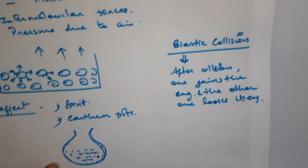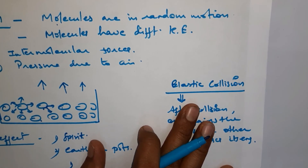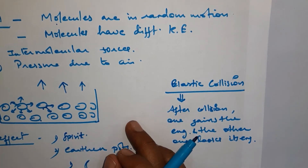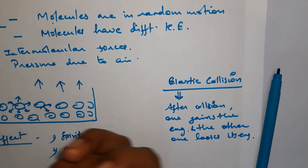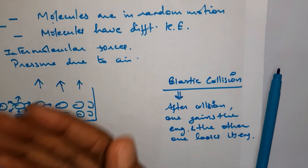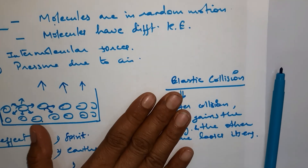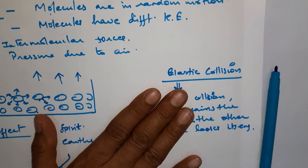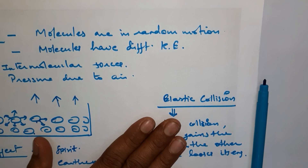Another example is sweat on our bodies. During summer, sweat brings a cooling effect on our skin. The sweat takes heat energy from our skin, and as it takes this heat it changes to vapor state, leaving the body cooler behind. These are a few examples of evaporation's cooling effect. You can think of more examples, and if you have any problems you can ask in the comment box.